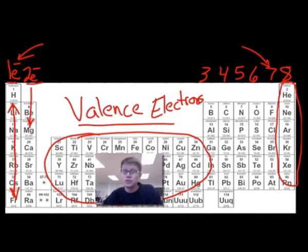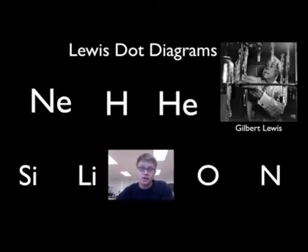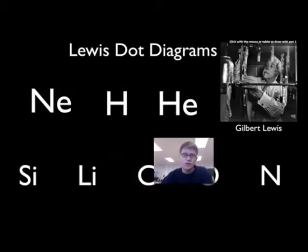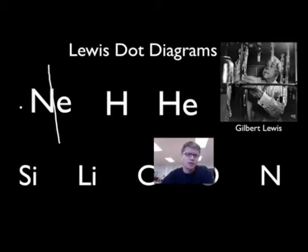So let's start with the first one. This is my method — I can't remember where I picked this up, but the first thing I do is, in my brain, I draw crosshairs across the symbol. So we're going to do neon.